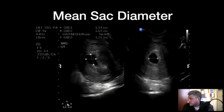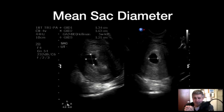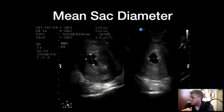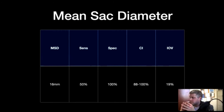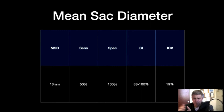Historically, studies said if the mean sac diameter is big enough — the historical number was 16 millimeters — and you should have seen something inside by that size, and you haven't, that's a pregnancy failure. As the sac grows and develops, at some point you should see the baby present within it. The historical number was 16 mm, but subsequently there have been case reports of mean sac diameters up to 21 millimeters where viable pregnancies were ultimately found. Using the 16mm cutoff gave 100% specificity for pregnancy failure but sensitivity was basically a coin flip.